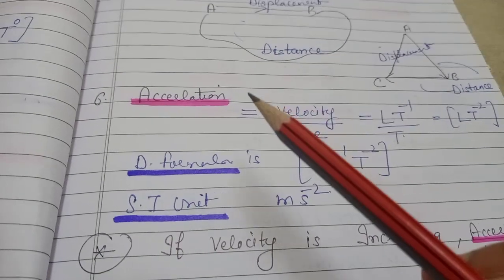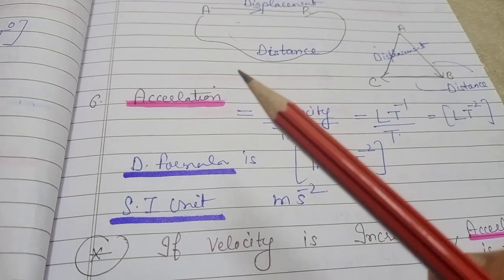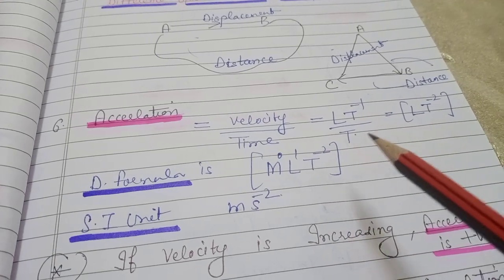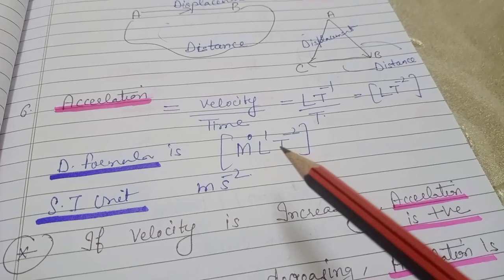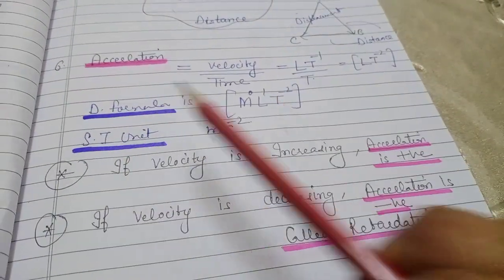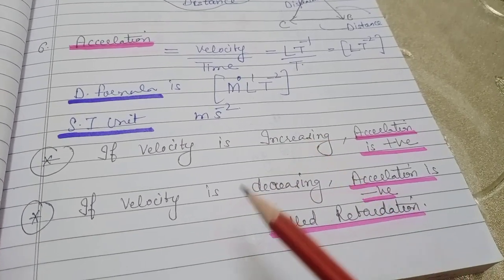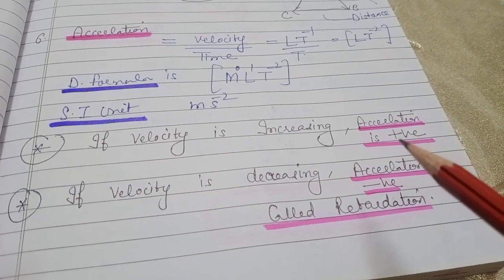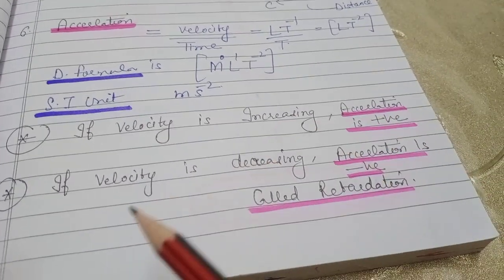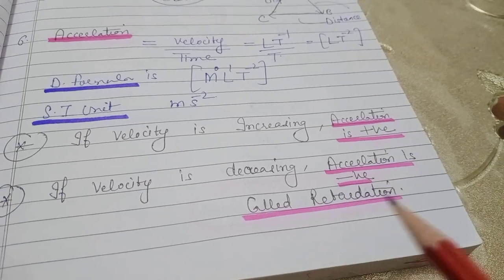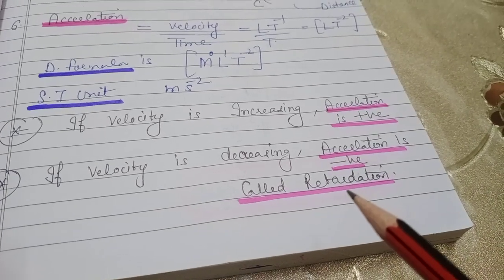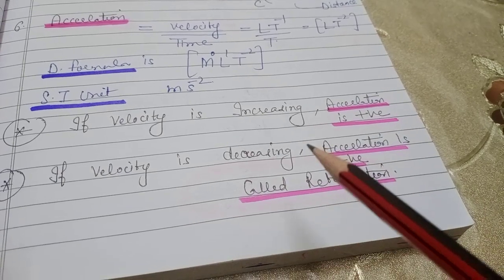अब acceleration क्या है? Velocity upon time। Velocity का dimensional formula [M⁰L¹T⁻¹], time का T — T ऊपर गया तो T⁻², formula बना [M⁰L¹T⁻²]। यहाँ दो चीज़ें note करनी हैं: अगर velocity बढ़ रही है तो body accelerate कर रही है — positive acceleration। अगर velocity कम हो रही है तो वो negative acceleration है, जिसको deceleration या retardation भी बोलते हैं।